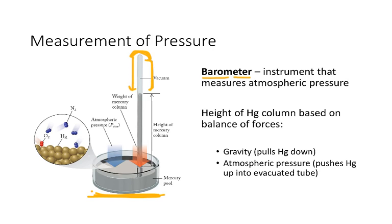Due to atmospheric pressure — the force of the atmosphere on the surface of this mercury pool — it's going to have some push on this mercury. And the push from the atmosphere is going to keep the mercury in this glass tube from falling all the way down.